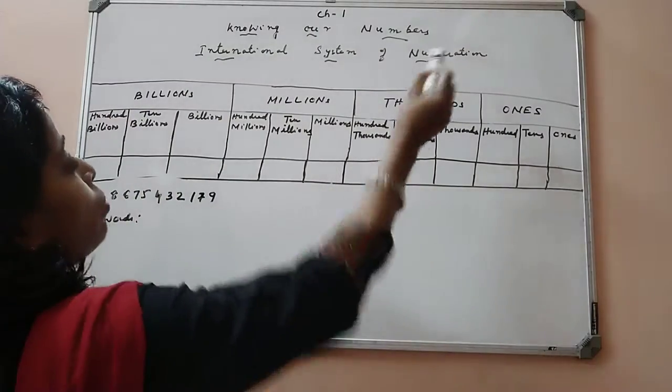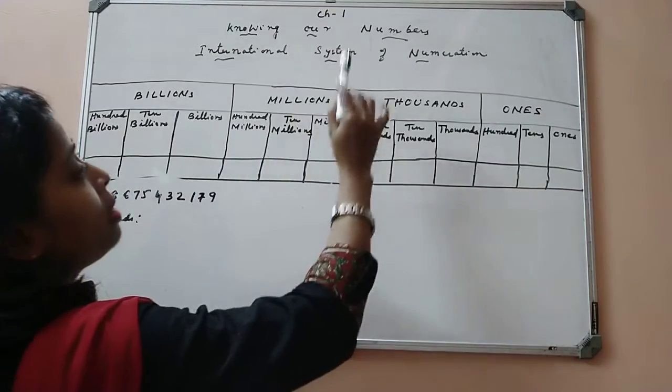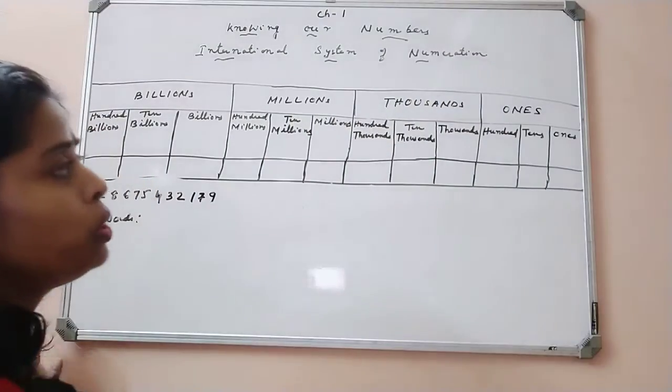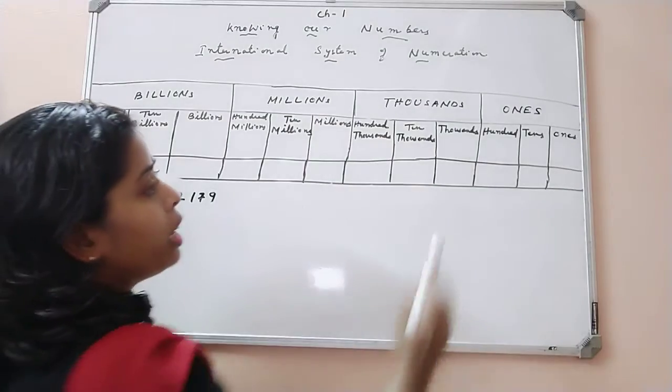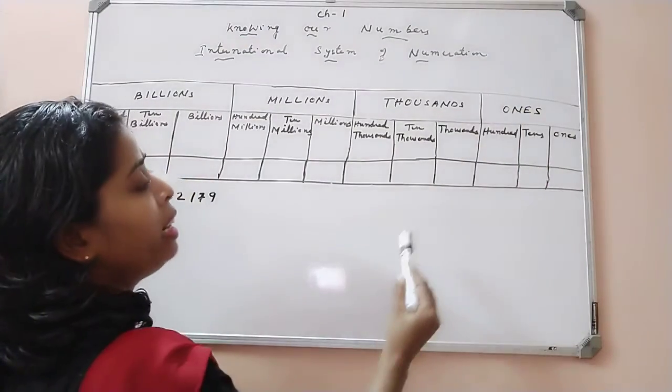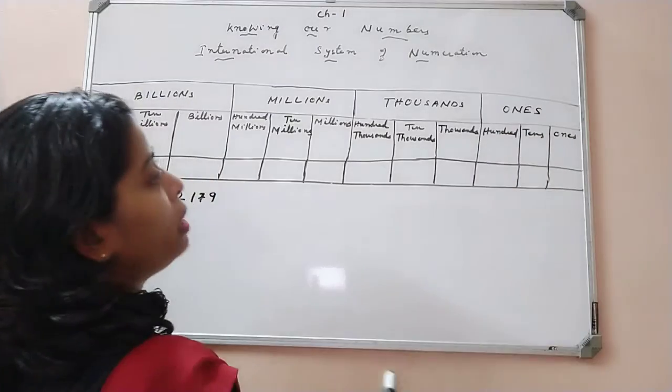International system of numeration. According to the international system of numeration, the numbers are first split into groups. If we start from the right hand side, we have first ones period, then comes thousands period.